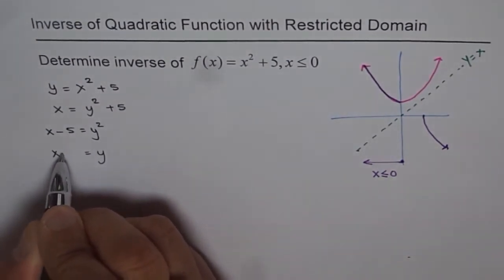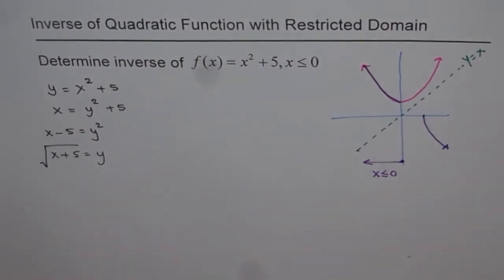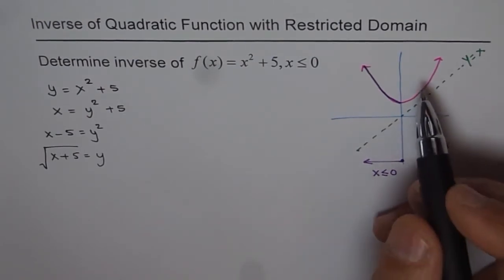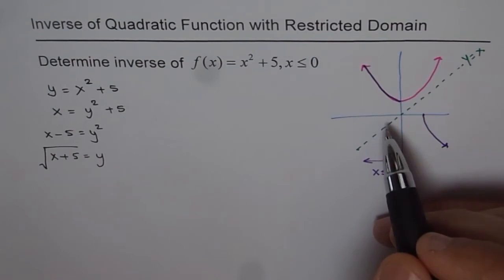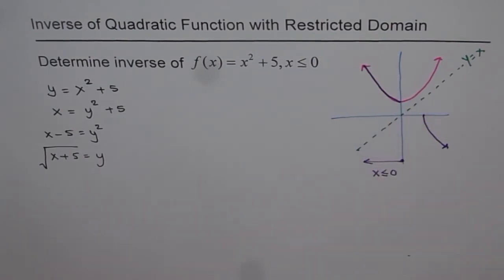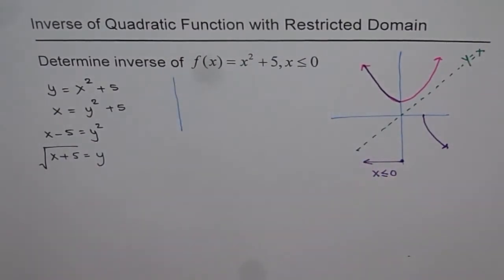Normally when we take a square root we write ± , but in this case should it be plus, minus, or both? That is the key question. There are several ways to answer it, but let me introduce the idea of using domain and range.